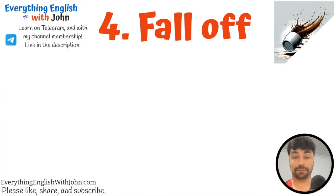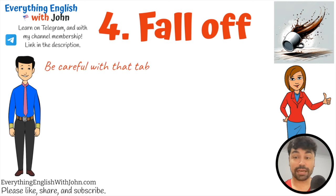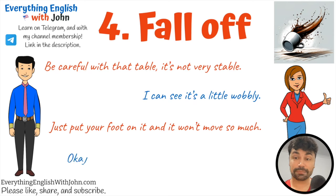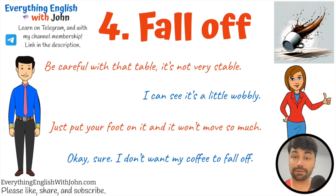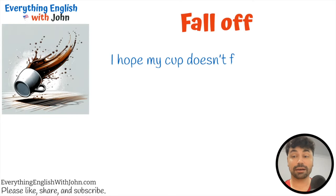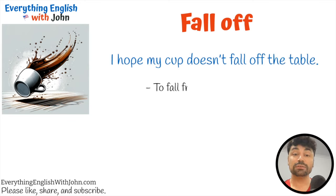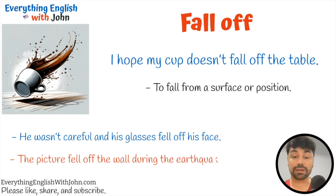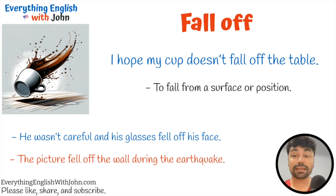Number four: fall off. Be careful with that table — it's not very stable. I can see it's a little wobbly. Just put your foot on it and it won't move so much. I don't want my coffee to fall off. I hope my cup doesn't fall off the table. The picture fell off the wall during the earthquake. The words 'on' and 'off' are very common when talking about surfaces or platforms. When something is on a surface, it's stable. When it falls off, it loses contact.